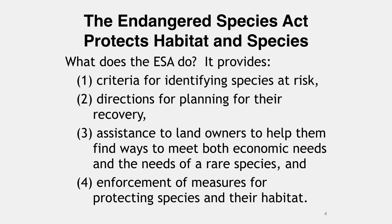The Endangered Species Act of 1973 was signed on December 28, 1973, and provides for the conservation of species that are endangered or threatened throughout all or a significant portion of their range, and the conservation of the ecosystems on which they depend. The ESA replaced the Endangered Species Conservation Act of 1969. Approximately 2,270 species are listed as endangered or threatened under the ESA, of which about 650 are foreign species found only outside of the United States and our waters.